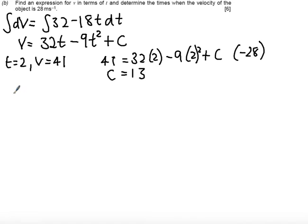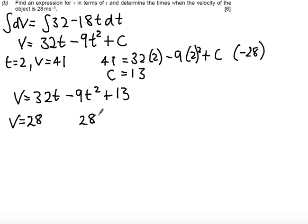And so my equation is v equals 32t minus 9t squared plus 13. Finally, the last part I want to do is I want to determine the times when the velocity of the object is 28 meters a second. So just stating that v equals 28, we get that 28 will be equal to 32t minus 9t squared plus 13.